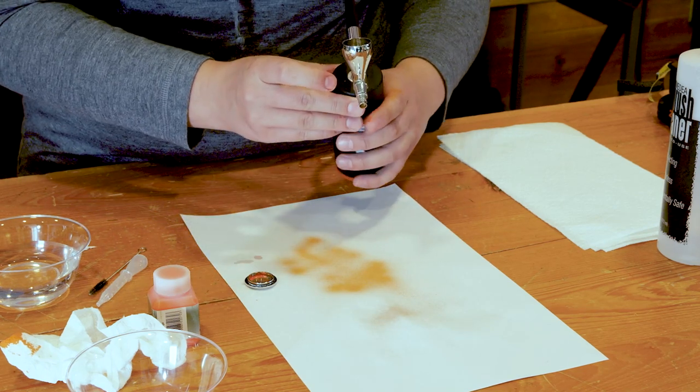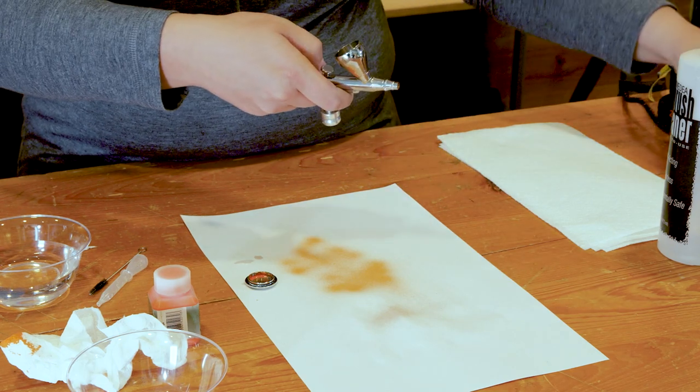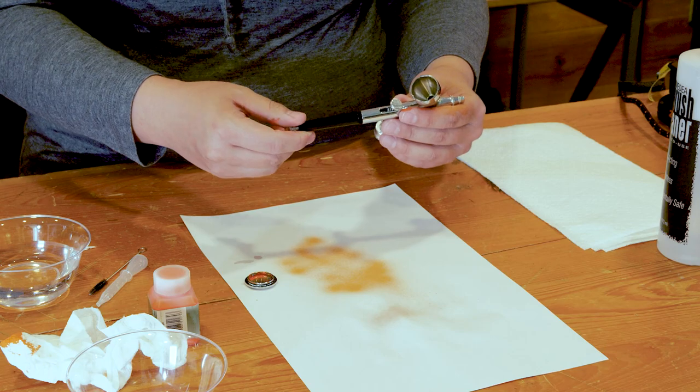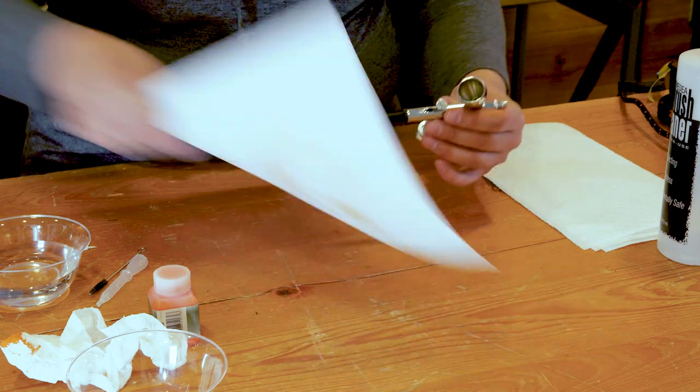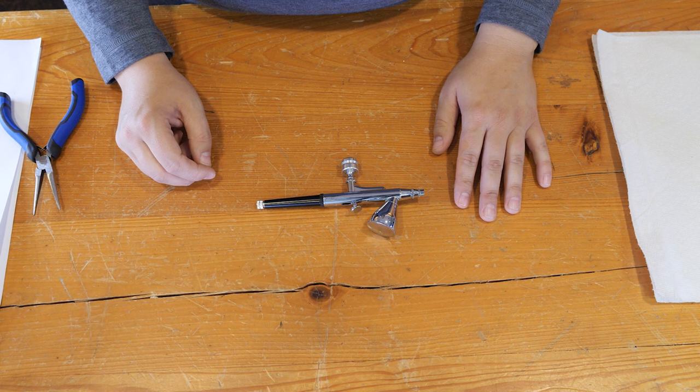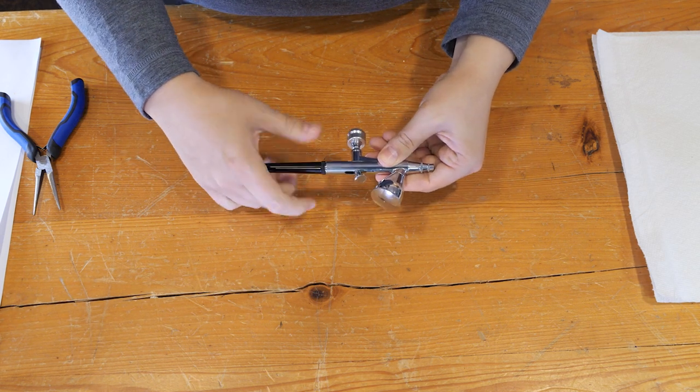For best use we recommend deep cleaning your tool after completely done using it. To do so, remove it from the power and you're going to completely disassemble the tool. Next we're going to disassemble the tool for deep cleaning. First unscrew the tail housing.